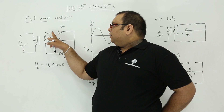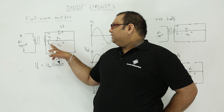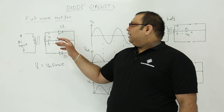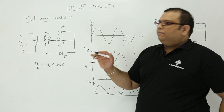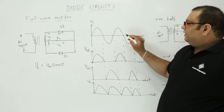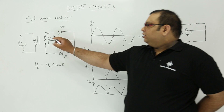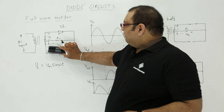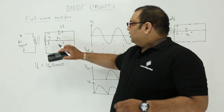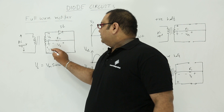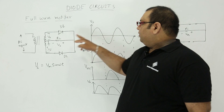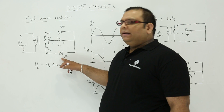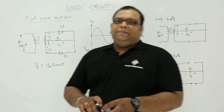In the center tap transformer, this terminal will be plus Vs and this will also be plus Vs, giving us two voltage levels. When we take the positive half of the waveform, during the positive half we have plus Vs here and minus Vs on the other side. Because of plus Vs, diode D1 will start conducting, but since this side is minus Vs, diode D2 will be in the off state.